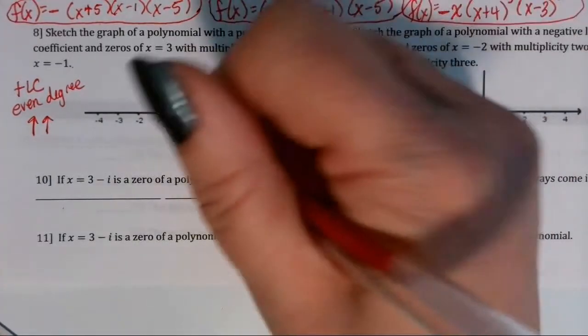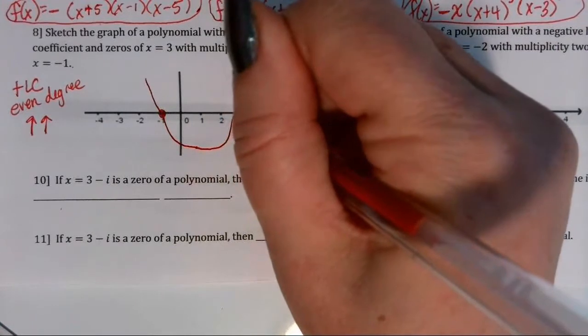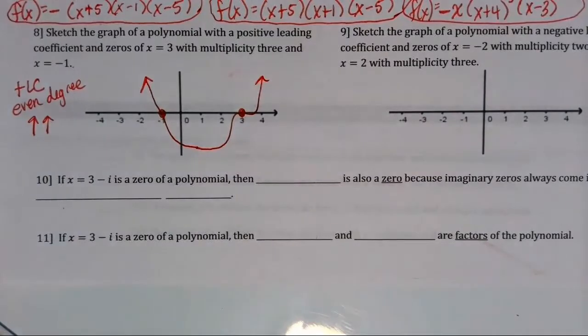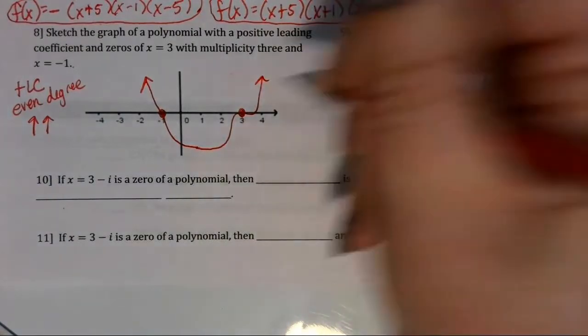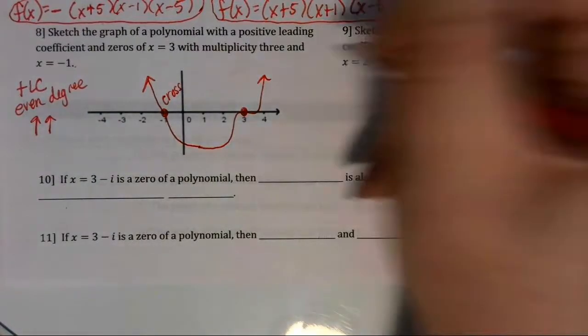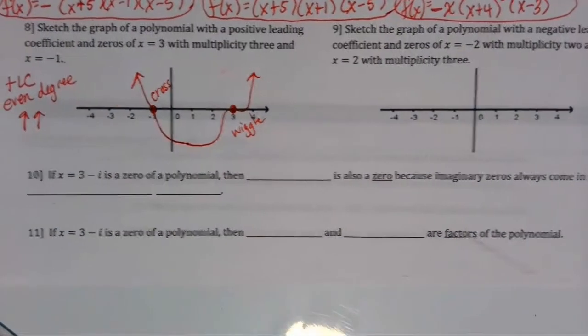So the wiggle has to come through that real zero at 3 and then the end heads up to positive infinity. So my graph has to cross at negative 1 and it has to wiggle through positive 3.